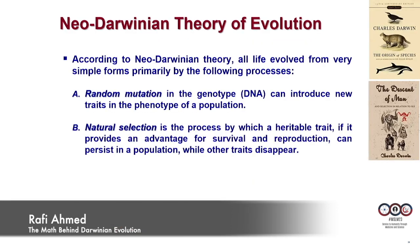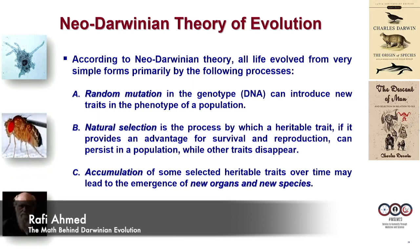What is Darwinian theory of evolution? It has three components: random mutation, natural selection, and the claim that the accumulation of selected heritable traits over time may lead to the emergence of new organs and new species — from amoeba to drosophila to Darwin — all by these three aspects of Darwinian evolution.